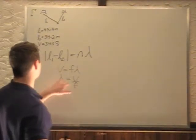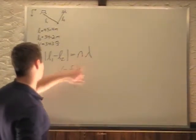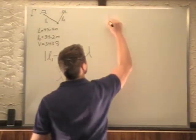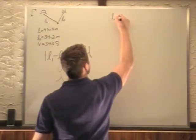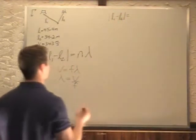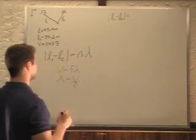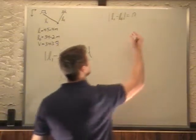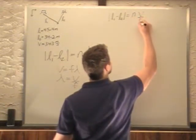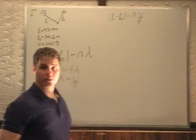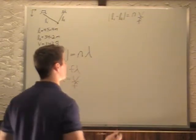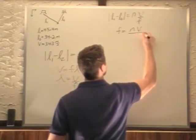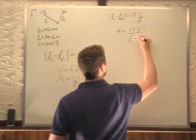We can plug V over F in for lambda here. So this whole thing turns into L1 minus L2 equals N, the integer, times lambda, which is V over F. Now we're looking for the two smallest frequencies, so let's just solve for frequency to start with. So F, if we multiply it over, is equal to N V over L1 minus L2.